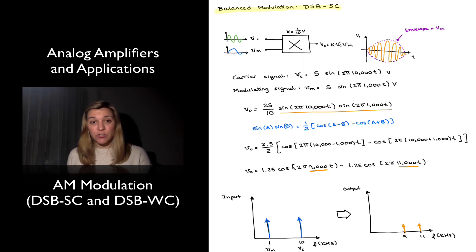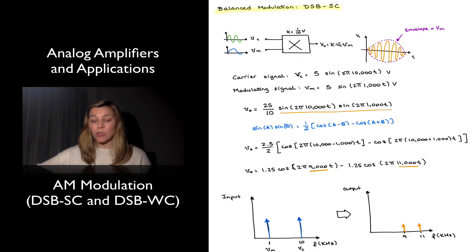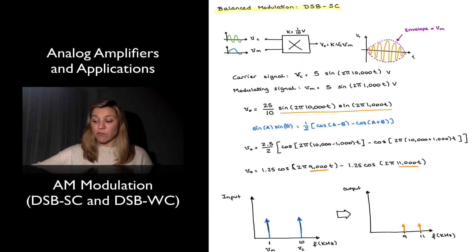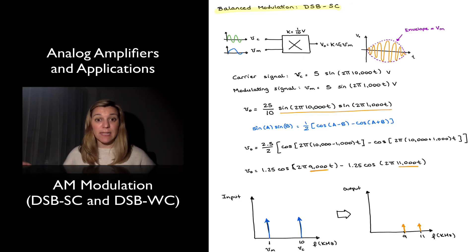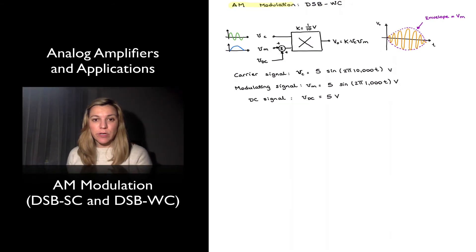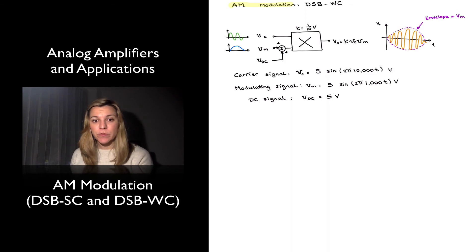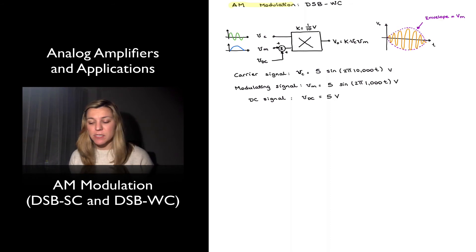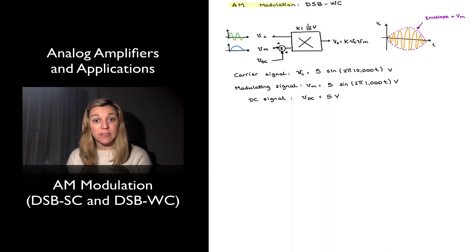There are other modulation schemes. A very close one to balanced modulation is the standard AM modulation scheme, also referred to as double sideband with carrier. Next we're going to see how it differs from balanced modulation in terms of implementation.